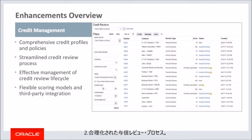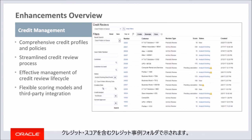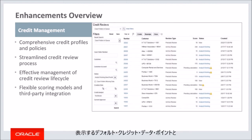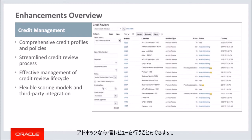Second, streamlined credit review process. Based on customer's credit profile setup, credit reviews will be created automatically when credit checks fail or when periodic reviews are due. Each credit review is represented by a credit case folder containing the credit data and pre-calculated credit score for the customer. You can define credit case folder templates to capture the default credit data points to be displayed and a default scoring model to be used for credit score calculation. Besides credit reviews generated by the system, you can also conduct ad hoc credit reviews by creating credit case folders manually.